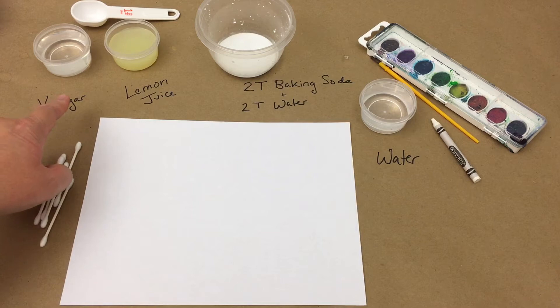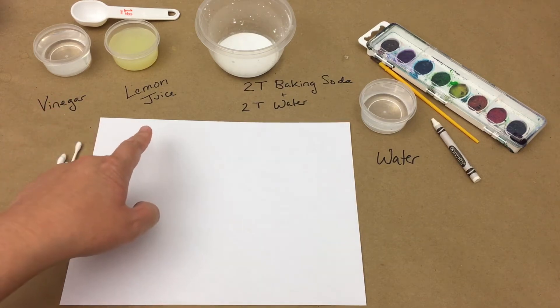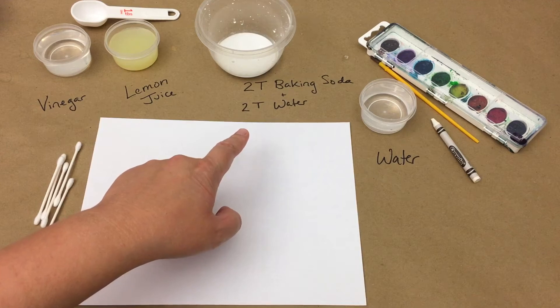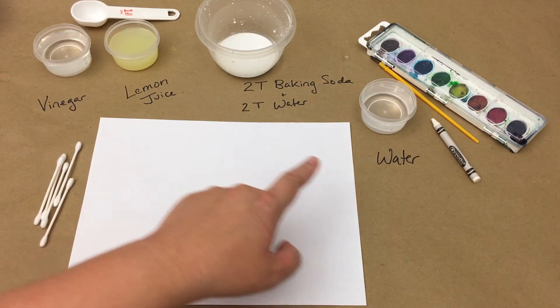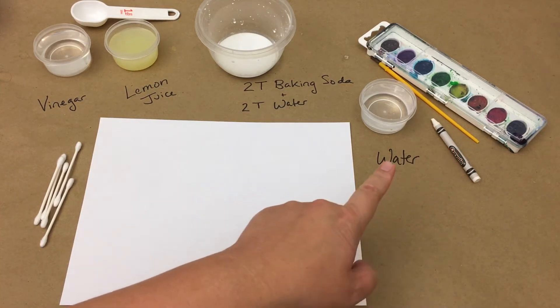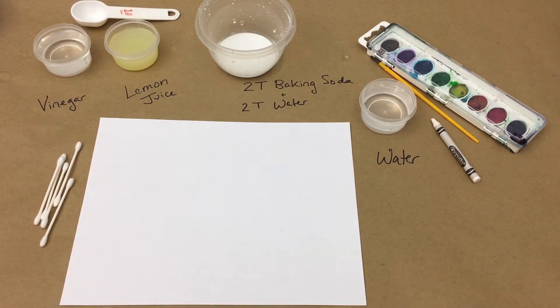We are going to use vinegar, lemon juice, a mixture of two tablespoons baking soda and two tablespoons water, as well as a white crayon, a paintbrush, a set of watercolor paints, and a small dish of water.